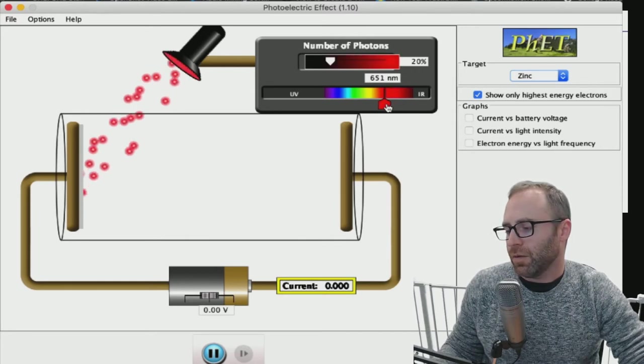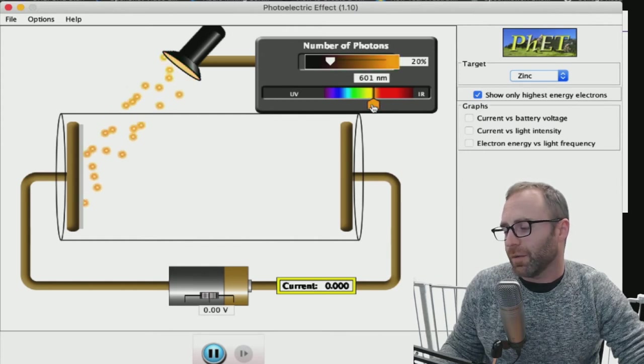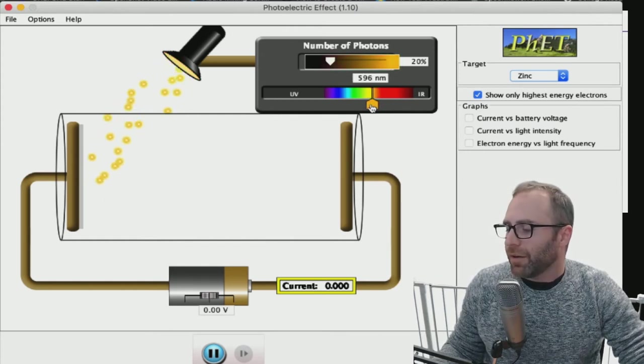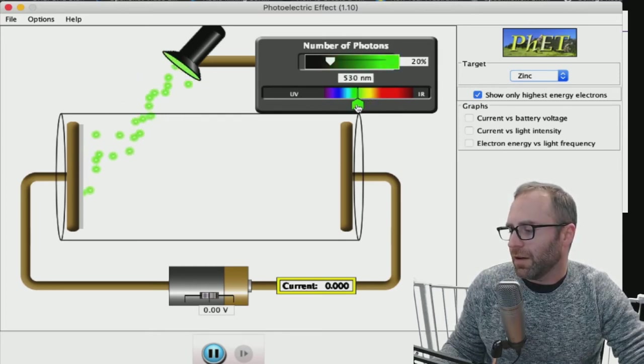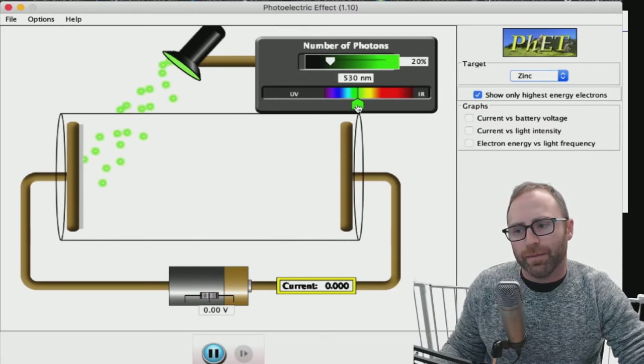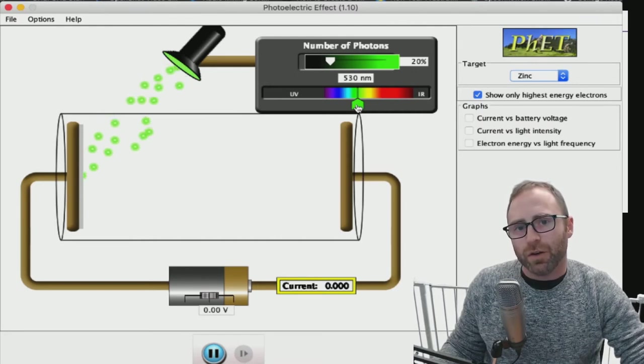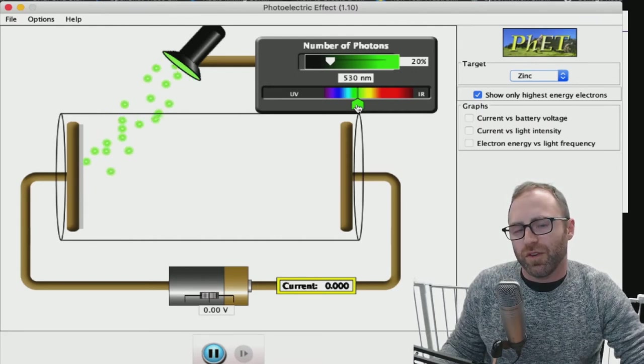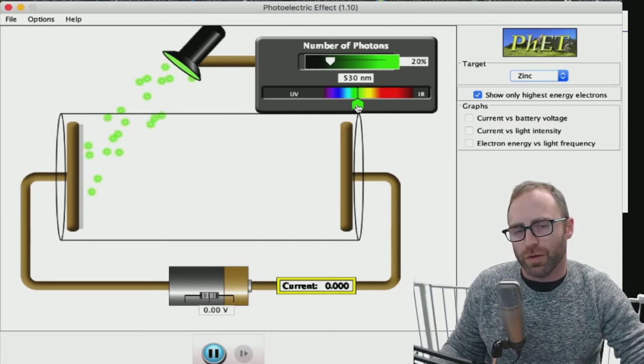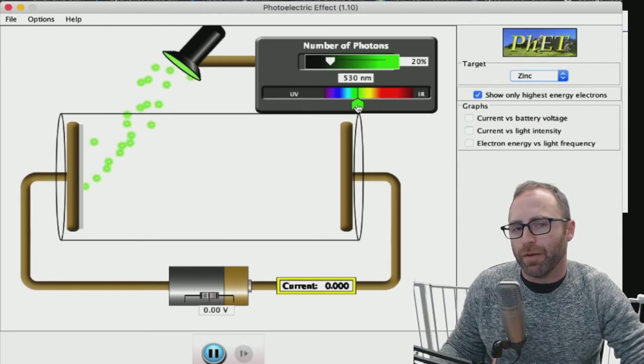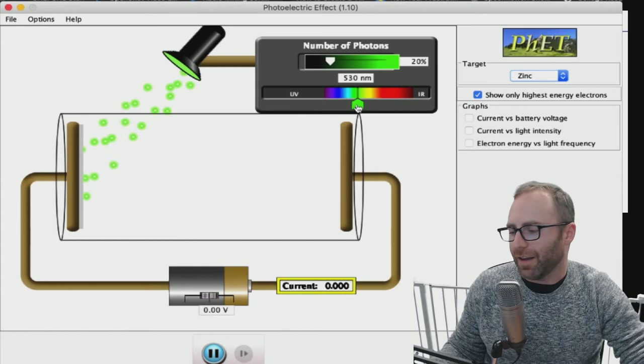So let's slowly move our slider along and we're increasing the wavelength or I'm sorry we're decreasing the size of the wavelength we're increasing the energy and here was that green and nothing's happening and this is because different metals electrons require different energies of the incoming photons in order for those electrons to get ejected. Not all metals are the same so every metal is going to have its own individual wavelength necessary to eject that electron.